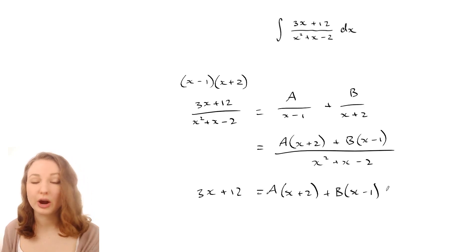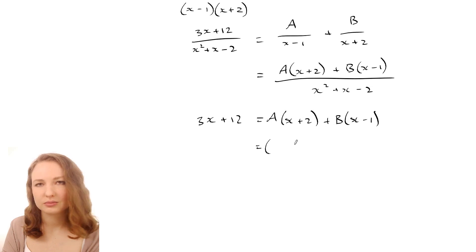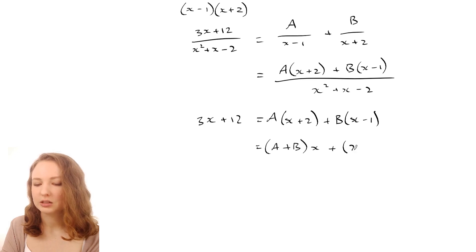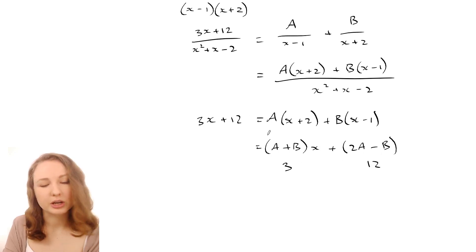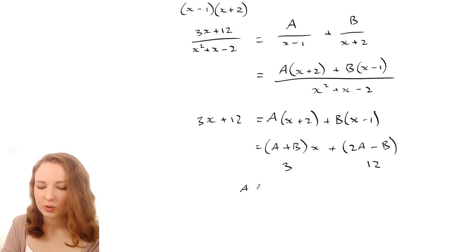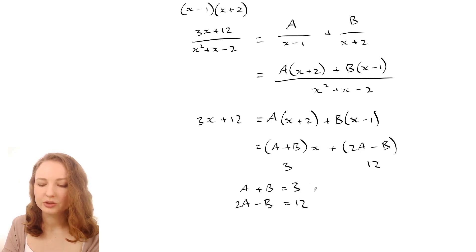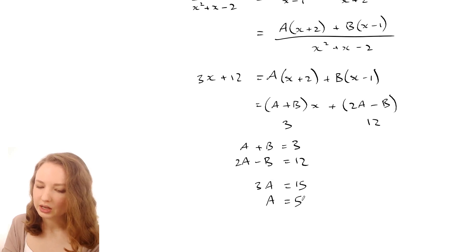There are two main methods to figure out what A and B are. One is to expand and then collect all the x terms together and all the constants together. So you'll get (A+B)x + (2A−B). We know this has to equal the original numerator, so A+B equals the coefficient of x and 2A−B equals the constant, if this equation is true for all values of x. So we can solve these two equations simultaneously: A+B=3 and 2A−B=12. Adding those two equations gives 3A=15, so A=5, and plugging back in gives B=−2.